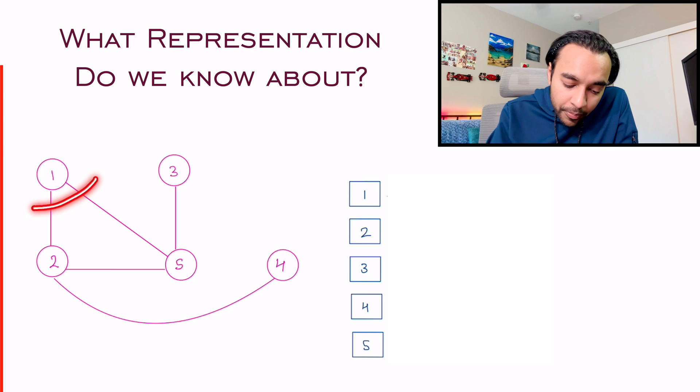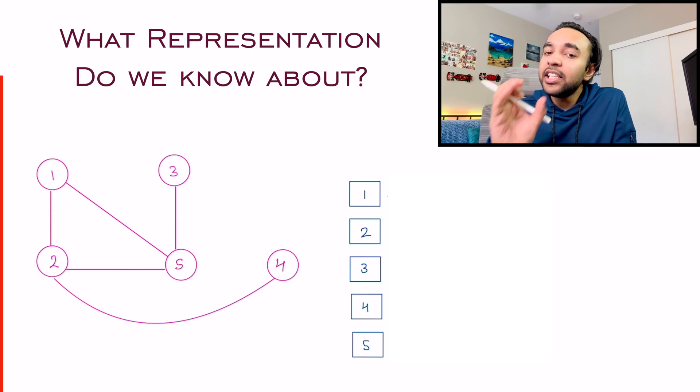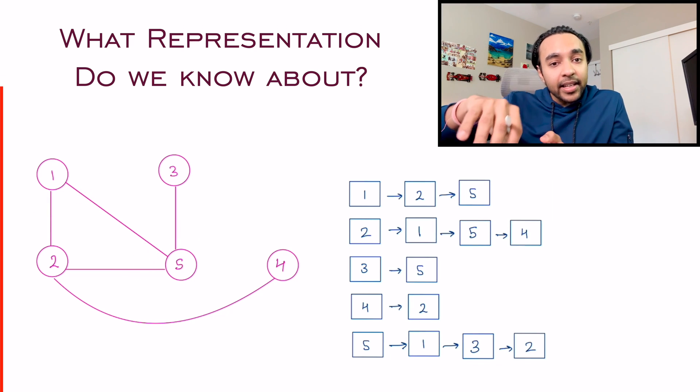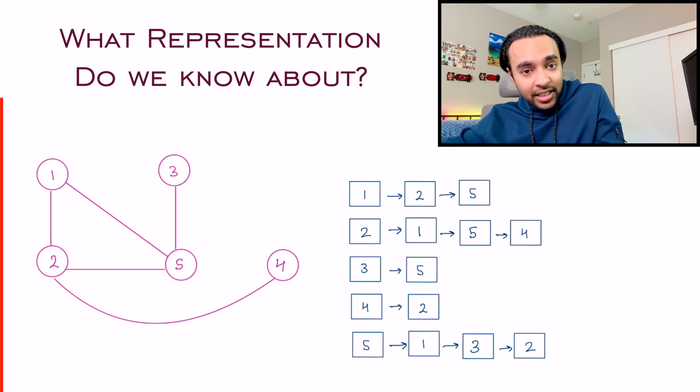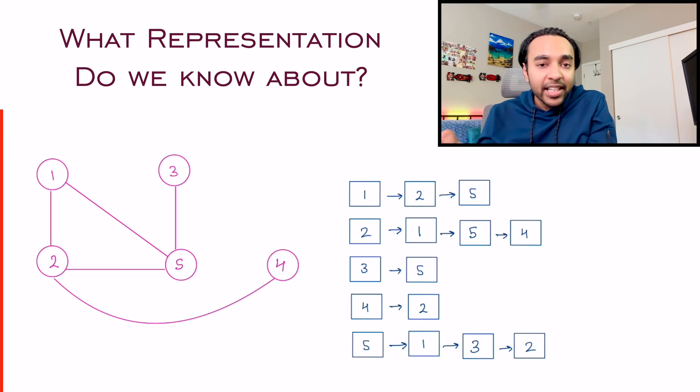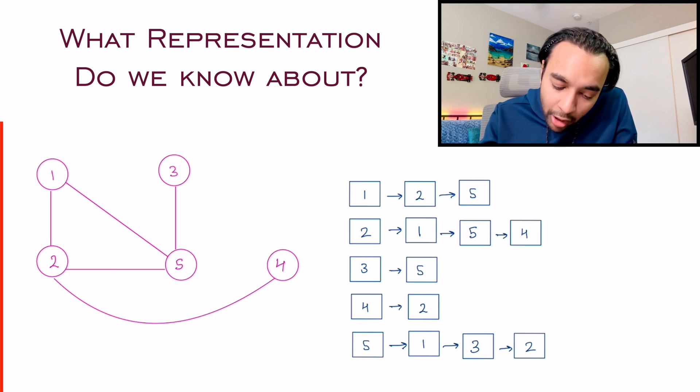And then you can just look at how many neighbors each of the vertices have and then you can define linked lists. So this completes your adjacency list.